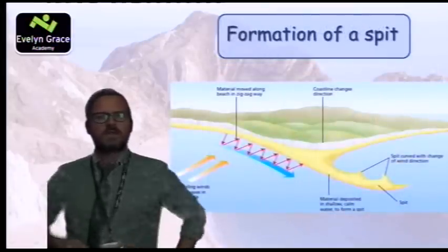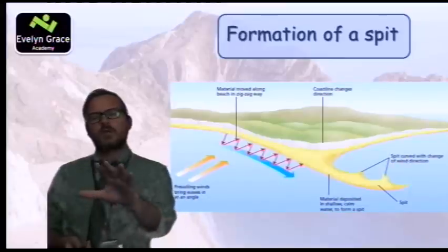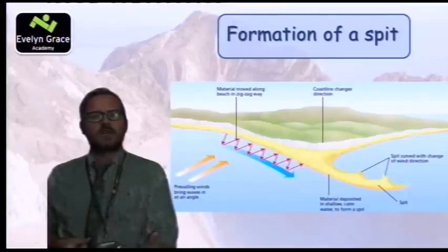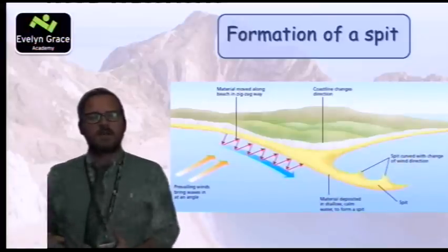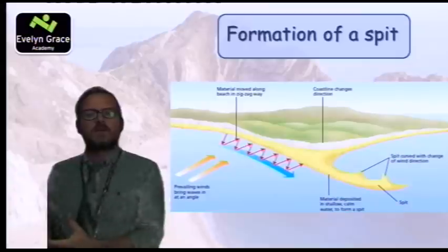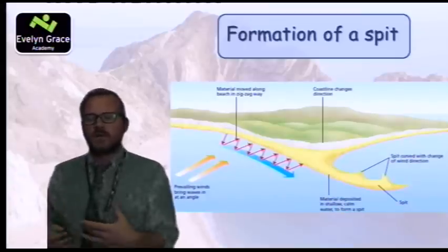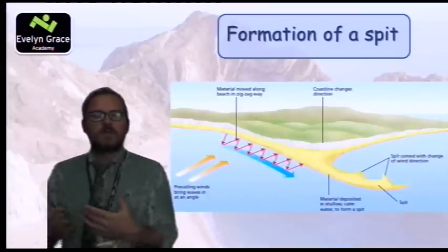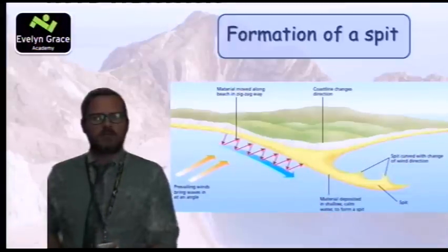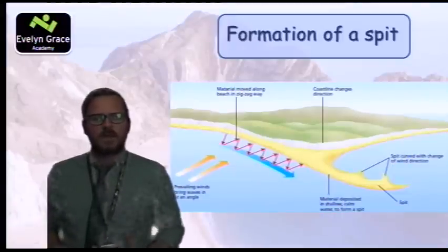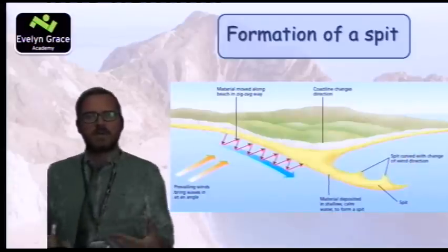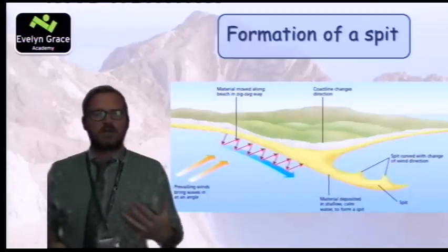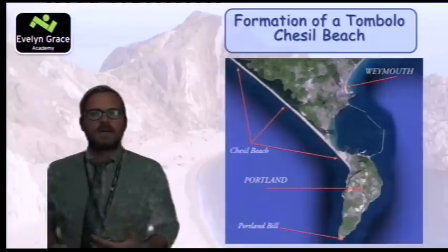The formation of a spit: you can see longshore drift in action, gradually creating a bar of sand which slowly builds up over time. It moves in the direction of a river mouth, driven by the prevailing winds, and it's quite a dynamic area that can change over time. As long as you remember that these depositional landforms are depositing material from the beach, you should be able to answer questions on them.